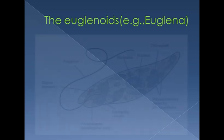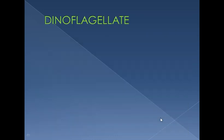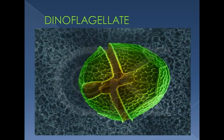Euglenoids include Euglena. In this figure, Euglena has a nucleus with a nucleolus, chloroplasts scattered throughout, and a flagellum — actually two flagella, but the smaller one is fused with the longer one, so apparently there is only one flagellum. They are motile.